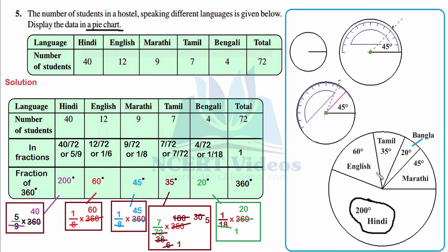That is how you construct angles greater than 180 degrees — you do not construct them directly; instead, you construct the previous smaller angles correctly and the larger one falls into place. With this, we have successfully constructed the pie chart for the given information, completing question five, the last question of Exercise 5.2, Chapter 5, Mathematics Class 8: Data Handling.